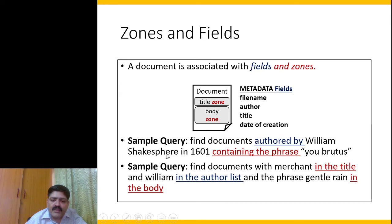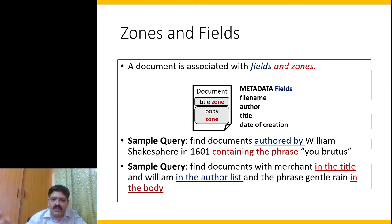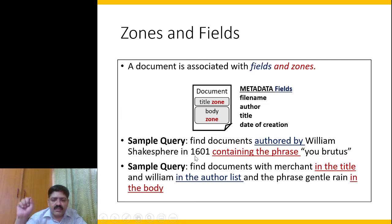Here are some sample queries. For example: find documents authored by William Shakespeare in 1601 containing the phrase 'Et tu Brute'. When I read 'containing the phrase', I expect a dictionary and an inverted index for matching. When matching with an inverted index I am looking at different zones, and I also need to use a filter for the year 1601 and check whether the author is William Shakespeare.